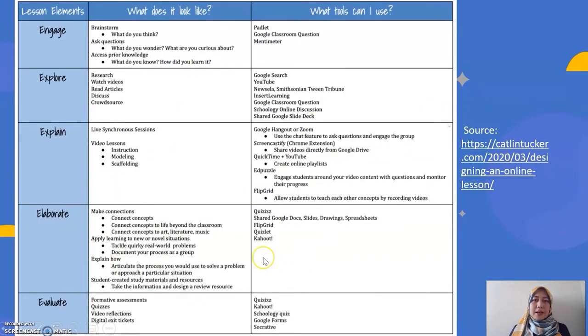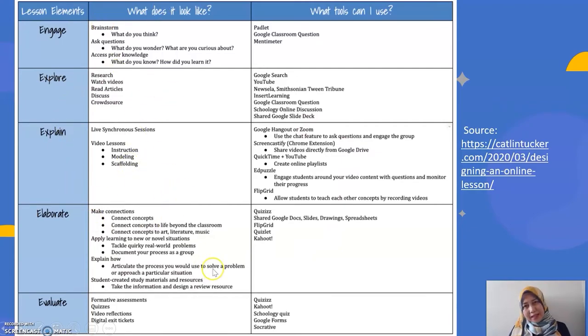The examples are as shown here for each of these stages in the 5E — what are the activities that can be done, and the examples of tools.